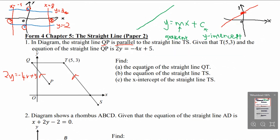Going back to the question: find the equation of the straight line QT. QT is a horizontal line, so the equation will be Y equals to something, referring to the Y-intercept. We are given that the coordinates of T is (5, 3). The Y-intercept is the Y coordinate, which is 3. So the equation of this line is Y equals to 3. The answer for part A is Y equals to 3.